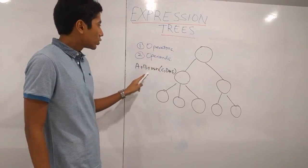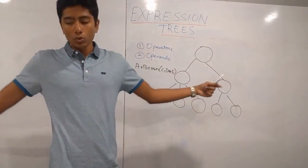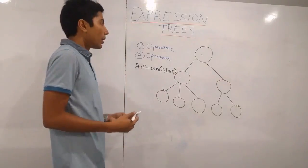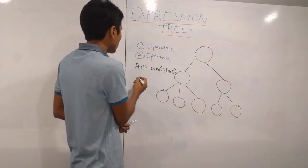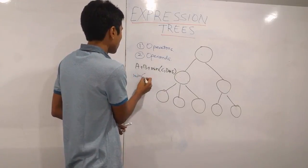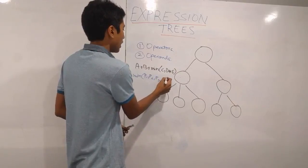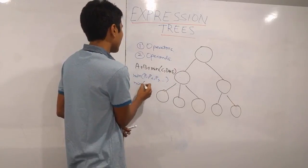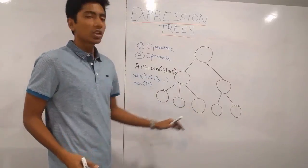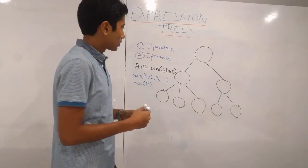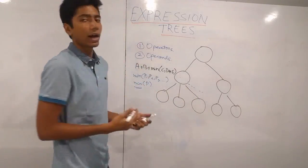Operators are usually binary, which means A plus B — there are two operands you're performing an operation on. But they could be more. For example, min over here could be min of P1, P2, P3, or min of an entire list P. So there's a variable number of children that an operator is going to have — you never know how many children this min operator is going to have.